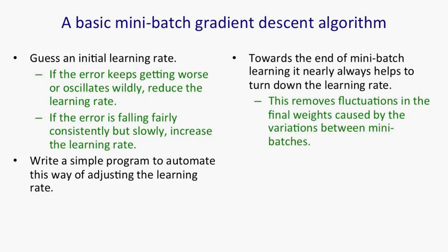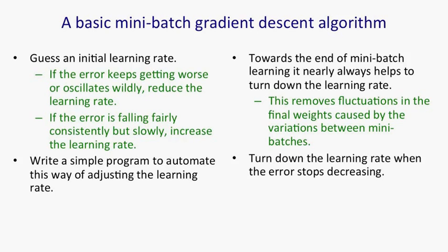And you'd like a final set of weights that's a good compromise. So when you turn down the learning rate, you're smoothing away those fluctuations and getting a final set of weights that's good for many mini-batches. A good time to turn down the learning rate is when the error stops decreasing consistently. And a good criterion for saying the error stopped decreasing is to use the error on a separate validation set. That is, it's a bunch of examples that you are not using for training and also they're not going to be used for your final test.